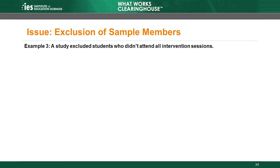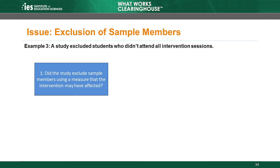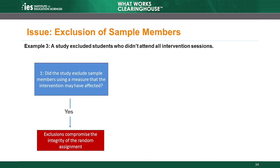What if the answer to question 1 is yes? This leads to the third WWC approach to sample exclusions. If the exclusion is based on characteristics that the intervention could have affected, then the WWC considers the random assignment process to be compromised. This means the study needs to demonstrate equivalence, and attrition is irrelevant. For example, sometimes researchers exclude students in the intervention group who didn't attend all the sessions of the intervention. The intervention could affect attendance, and the WWC is concerned that these situations can lead to systematic differences between groups, which could introduce bias. Therefore, these studies must demonstrate equivalence.